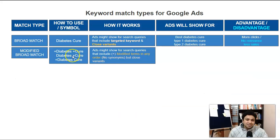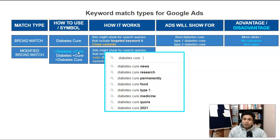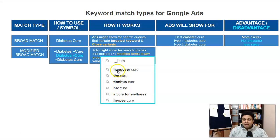If we add a plus sign before both 'diabetes' and 'cure,' then both keywords must appear in the search query in any order. However, if we only add plus before 'cure' and not 'diabetes,' our ad will show for any query containing 'cure' — like 'hangover cure,' 'HIV cure,' 'a cure for wellness' — all queries with 'cure' will trigger the ad.